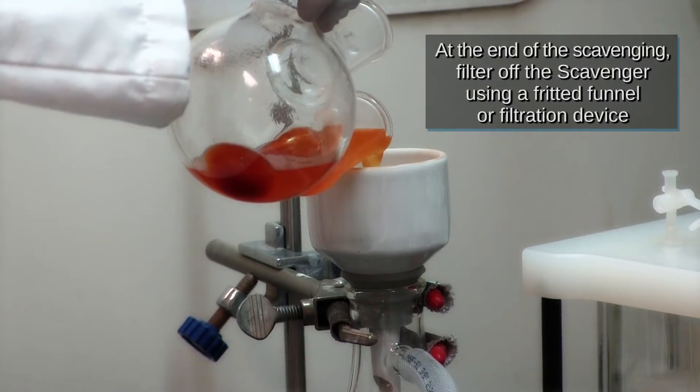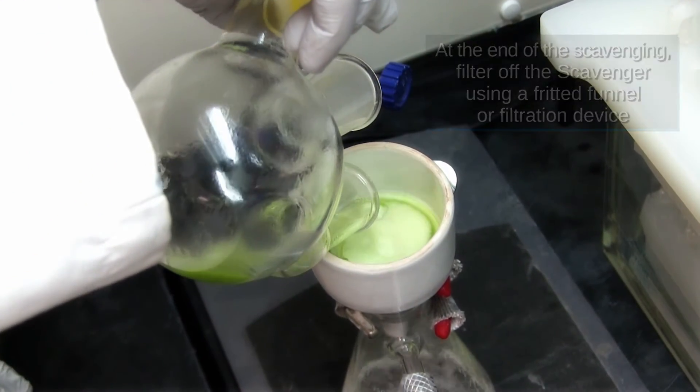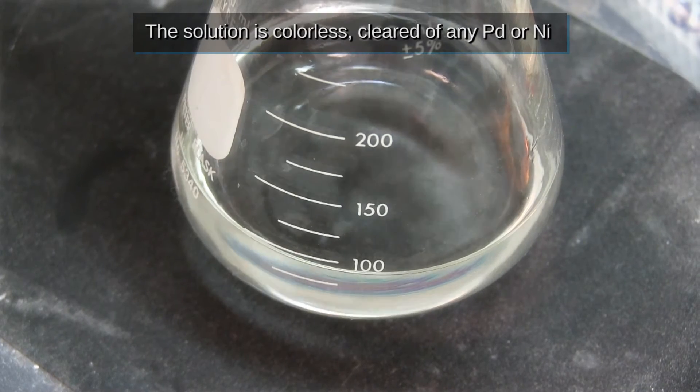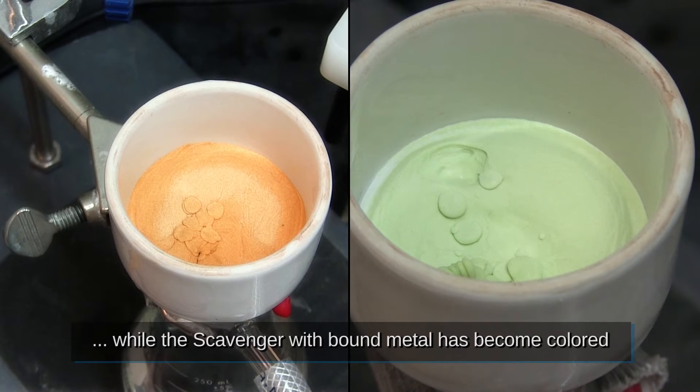At the end of the scavenging, filter off your scavenger using a fritted funnel or any kind of filtration device. The solution is colorless, cleared of any palladium or nickel, while the scavenger with bound metal has itself become colored.